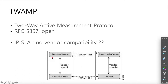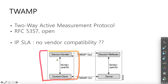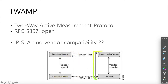In TWAMP, the client side is the controller-client, and there is also the sender and the controller. The network device side acts as the server-reflector. TWAMP first exchanges control packets, then sends the test packets.